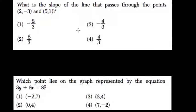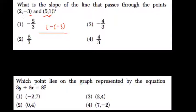What is the slope of the line that passes through the points (2, -3) and (5, 1)? Just subtract your y values: 1 minus negative 3 over 5 minus 2.